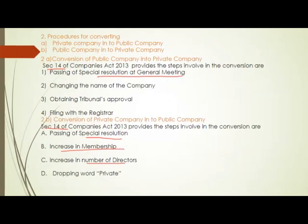Now the next question: what are the procedures for converting a private company into a public company and a public company into a private company? First, we are going to deal with the conversion of a public company into a private company. Section 14 of the Companies Act 2013 deals with this conversion. Certain steps are involved. The first step is passing of a special resolution at a general meeting.